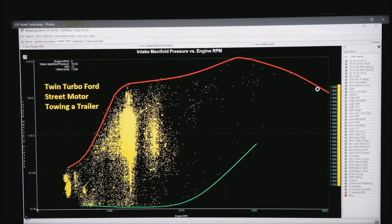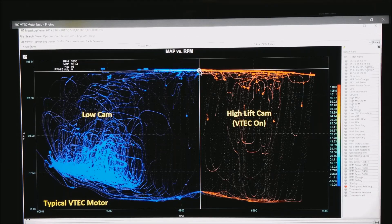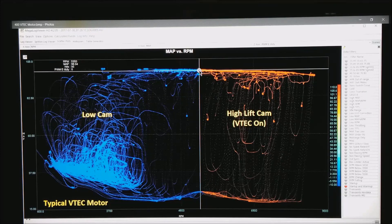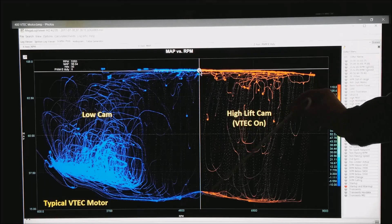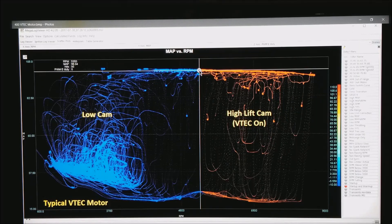In the lower left corner what you're seeing is this is the idle area of the motor. Now what we're looking at is the typical VTEC motor. On the left is when I'm on the low cam, on the right side above 5,350 where I switch on the VTEC.